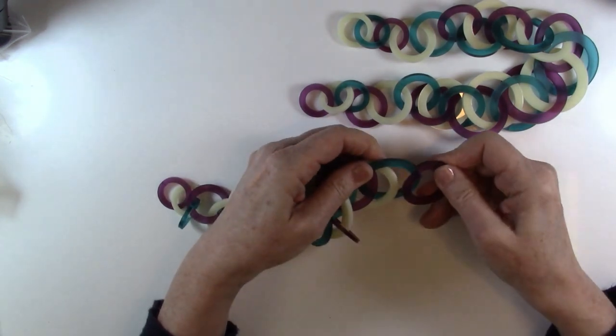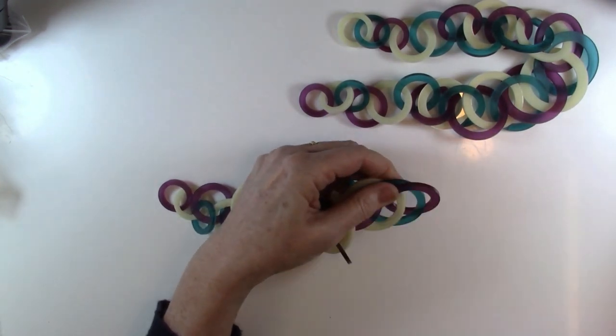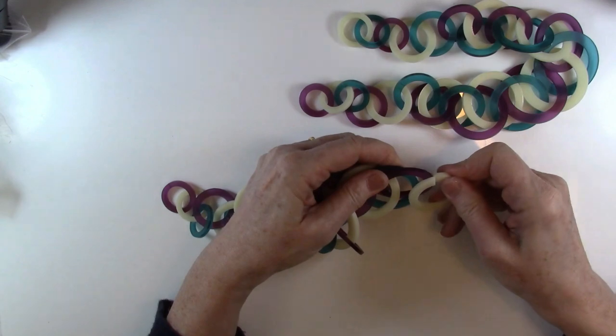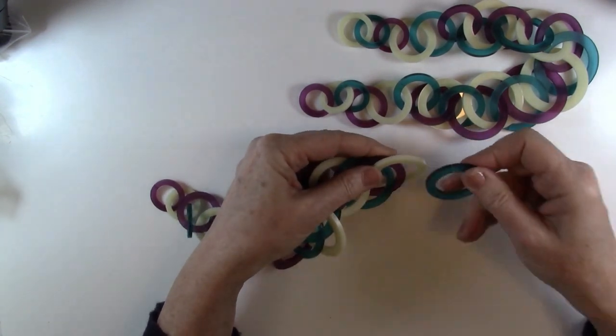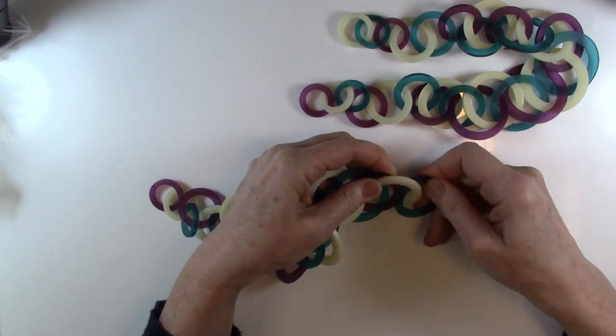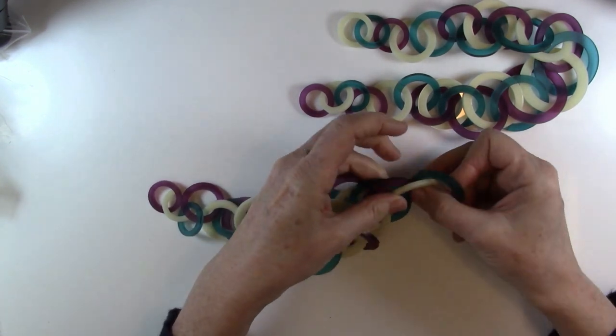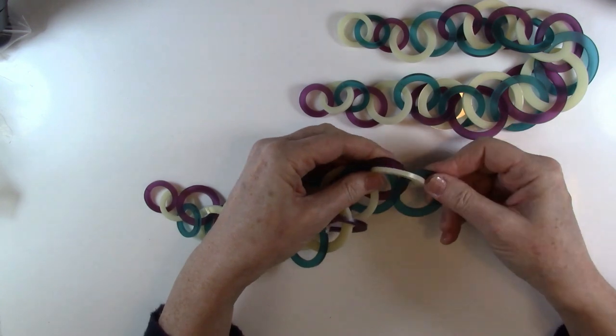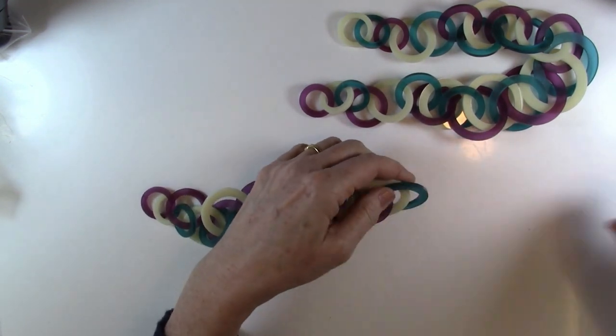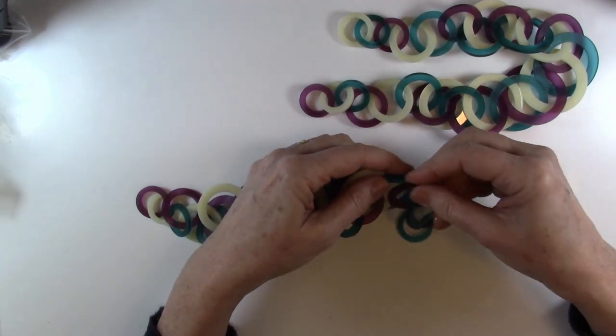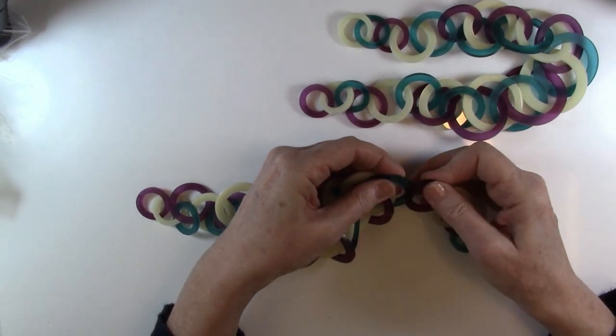So you can see I'm just continuing doing this all the way along. Going over one, going over two, and folding forward. Pick it up again, one, two, folding forward, and then it just continues straight as it did on the other one.